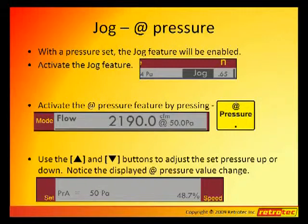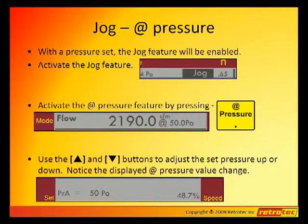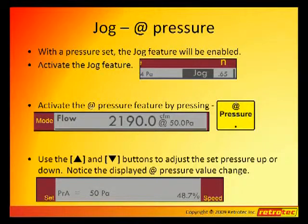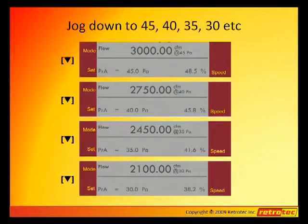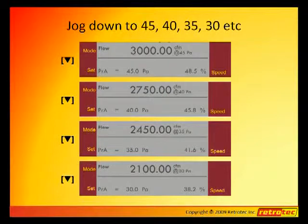If we set the pressure to 40, then the extrapolation pressure will also be 40. This will allow you to take extremely rapid readings when taking data for a multipoint test, almost as fast as you can click the down arrow and write the numbers down. Because in each instance, the gauge is automatically extrapolating to exactly the pressure that you wish to achieve, even though you may not have reached it yet. Here we see the pressure gauge jogging down from 45, 40, 35, and 30, each step accomplished by hitting the down arrow once.